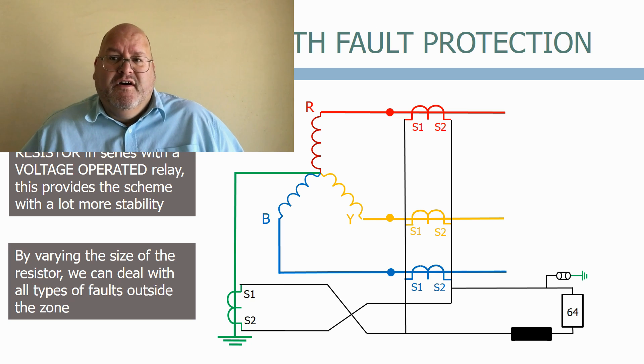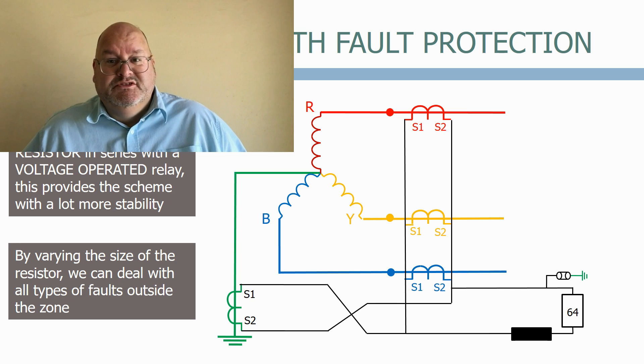Restricted earth fault protection is provided on most high voltage transformers, as it gives a clear indication that an earth fault has occurred on the winding being monitored. The stabilizing resistor value depends on the CT resistance and the resistance of the CT wiring. We will see how to calculate this in the future protection settings course. Thank you.